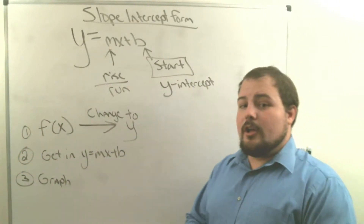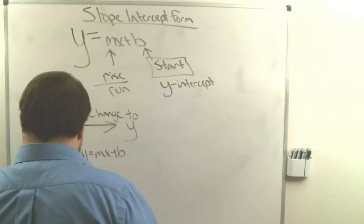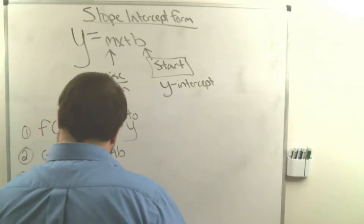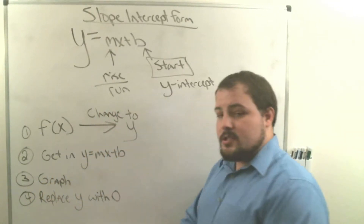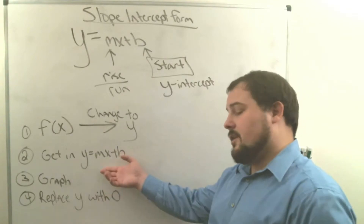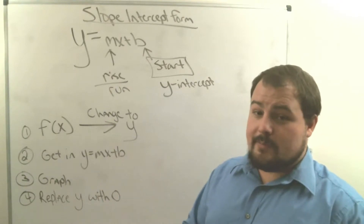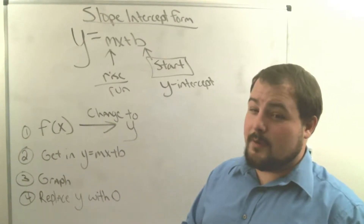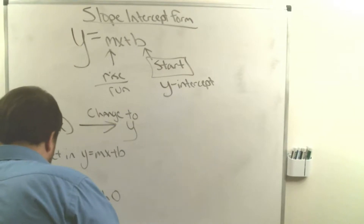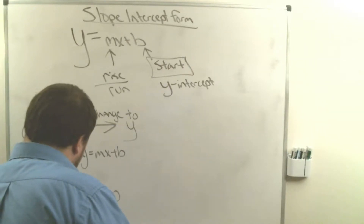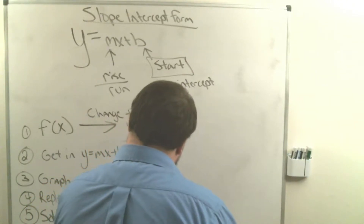Once our equation is in y equals mx plus b, step three is to graph it. Then, for step four, we want to find the zero — we replace y with zero in the equation. At that point we only have one variable left, which is x. Step five is to solve for x, and that gives us our x-intercept.